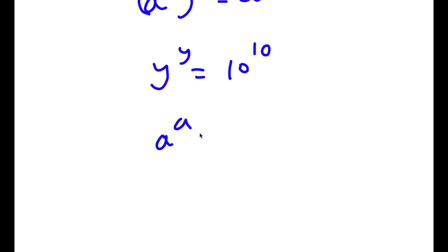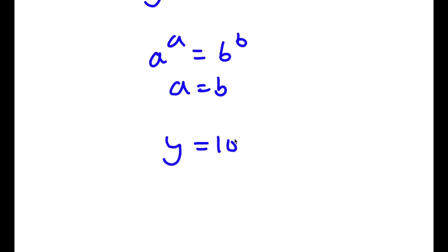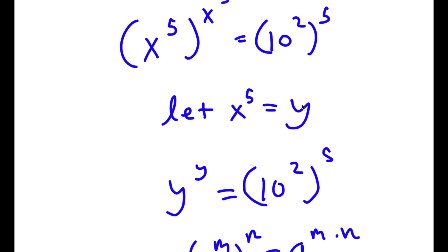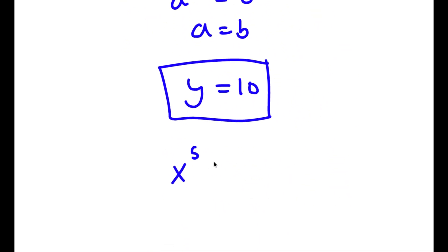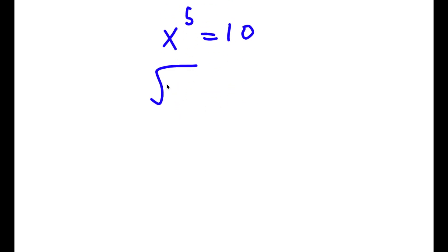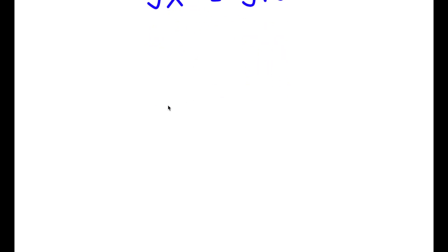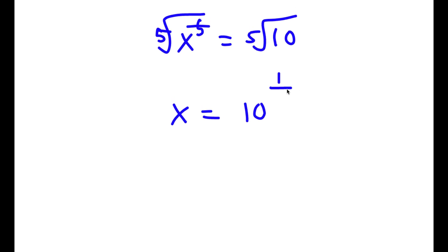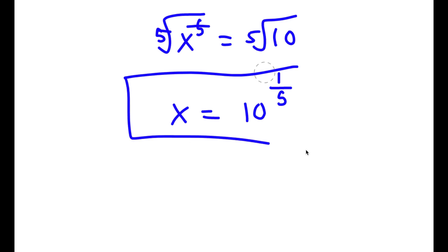Now if a to the power of a equals b to the power of b, then a equals b. So y is equal to 10. Remember we said x to the power of 5 is equal to y, and y is 10, so x to the power of 5 is equal to 10. Taking the 5th root on both sides, x is equal to the 5th root of 10, which can also be written as 10 to the power of 1 over 5.